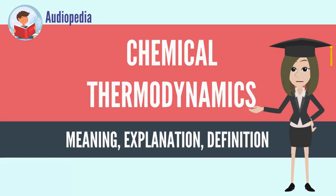Chemical thermodynamics is the study of the interrelation of heat and work with chemical reactions or with physical changes of state within the confines of the laws of thermodynamics. Chemical thermodynamics involves not only laboratory measurements of various thermodynamic properties, but also the application of mathematical methods to the study of chemical questions and the spontaneity of processes. The structure of chemical thermodynamics is based on the first two laws of thermodynamics.